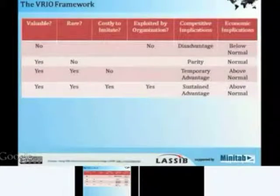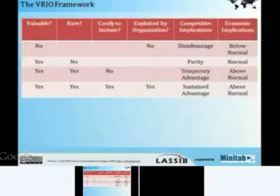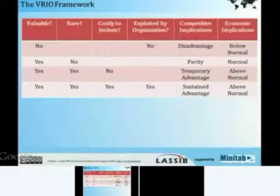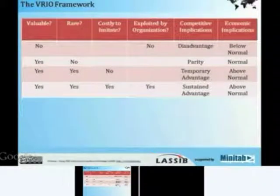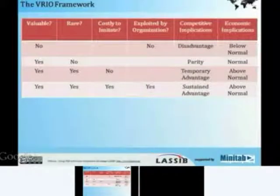The VRIO framework helps us find our strategic and competitive advantages. There are six columns: the first four are for Valuable, Rare, Inimitable and Organised. The next two columns are for competitive and economic implications. We can add additional columns depending on the strategic goals of your organisation — for example, impact to revenue, impact to employee satisfaction, impact to profitability, and so on.